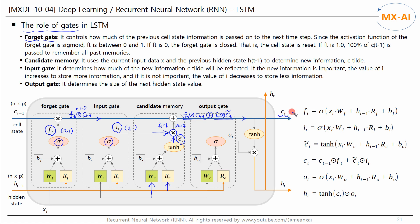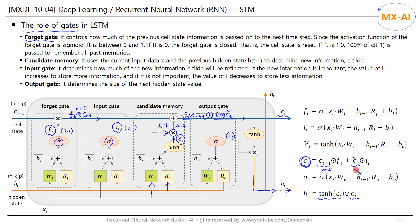This is the CT that is passed to the next time step. The formula for calculating CT is as follows, using the element-wise product. The output gate determines the size of the next hidden state value. Multiply the hyperbolic tangent of CT by OT and pass the resulting HT to the next time step. C of T minus 1 is the past information and C tilde is the current new information. Both F and I are between 0 and 1, making this formula similar to computing a weighted average — deciding how much of the past information to forget and how much new information to store.